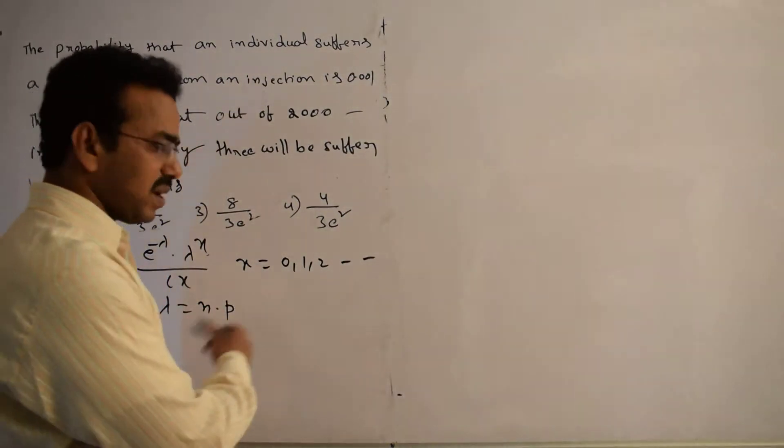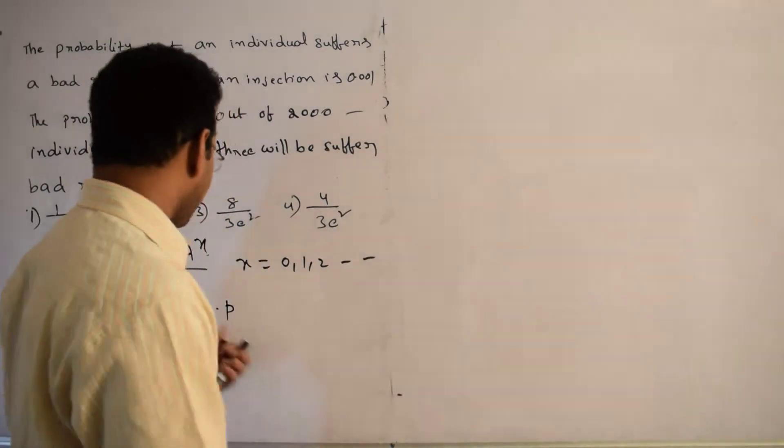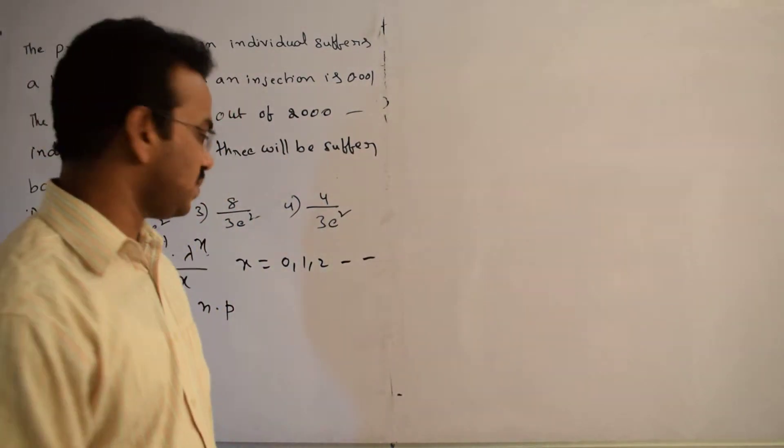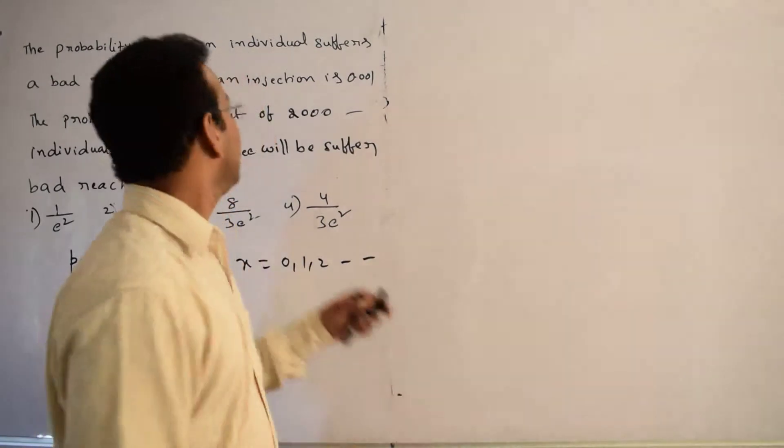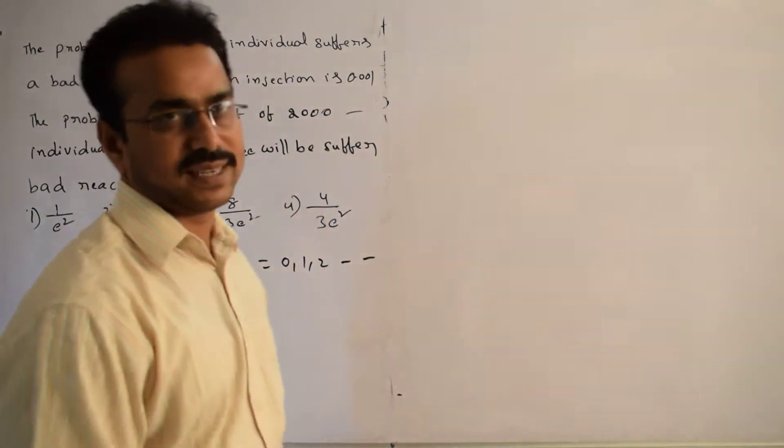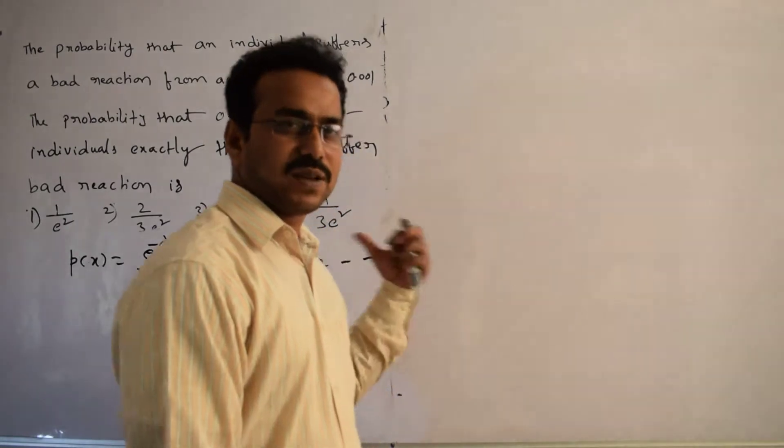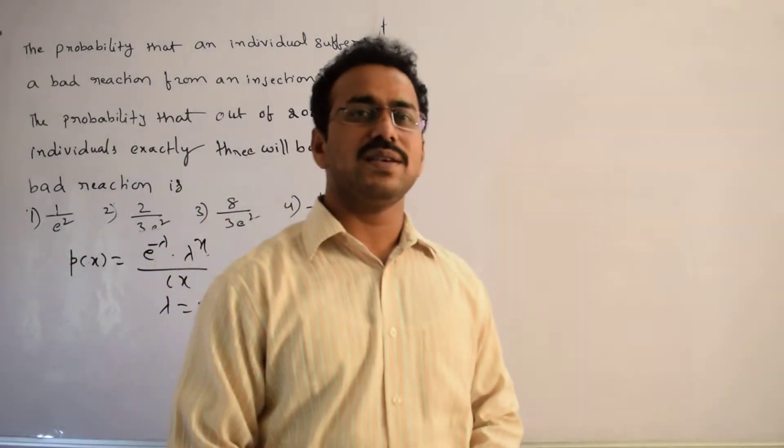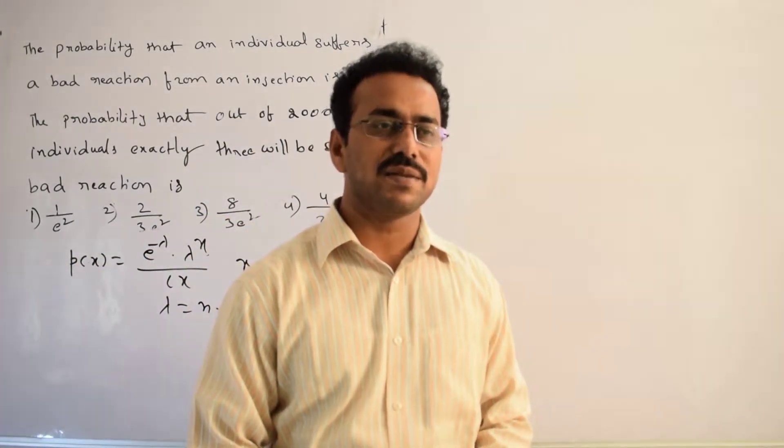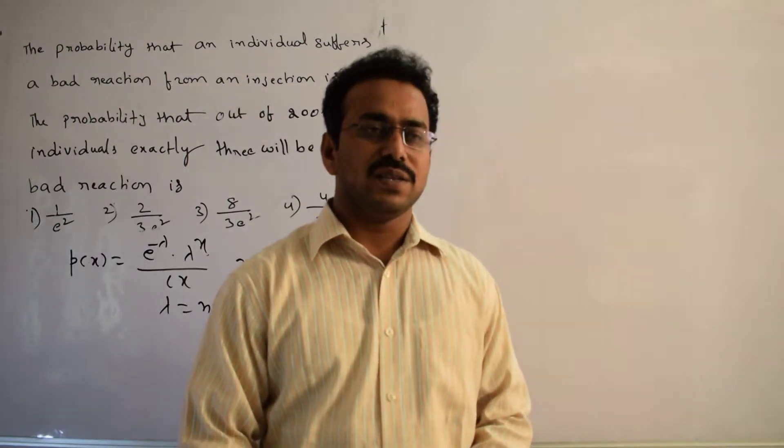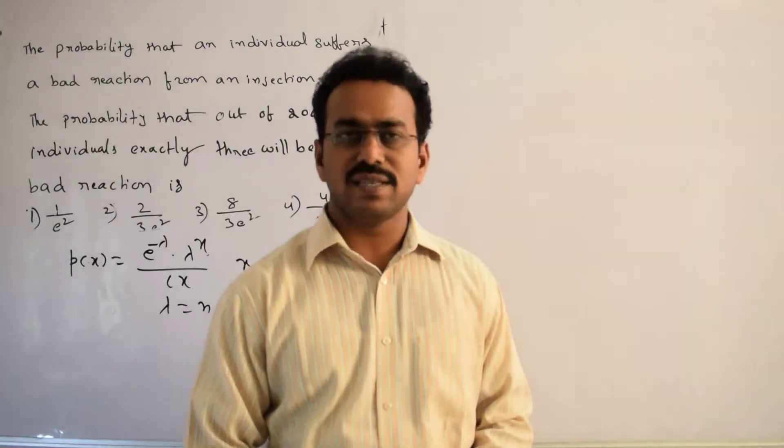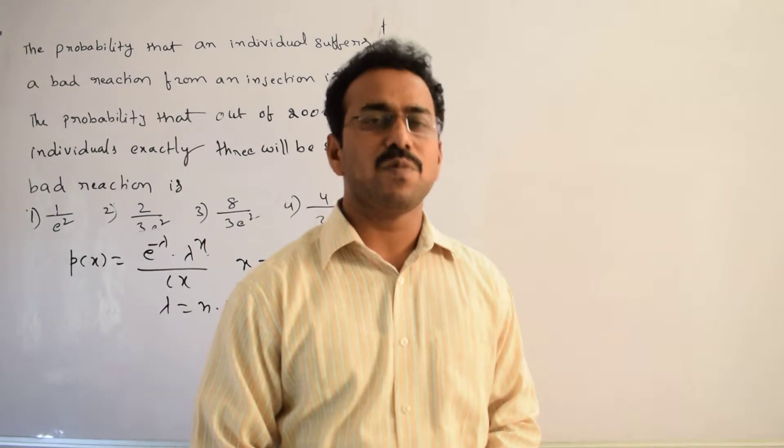Total number of samples in binomial distribution. p is the probability of success here, the probability that an individual suffers a bad reaction. So first of all, what is Poisson distribution? Poisson distribution is nothing but a limiting case of binomial distribution. In binomial distribution, if N is large and p is small, it leads to Poisson distribution.